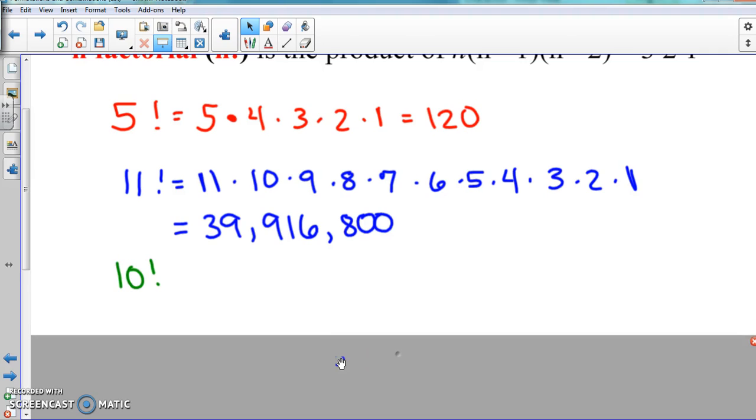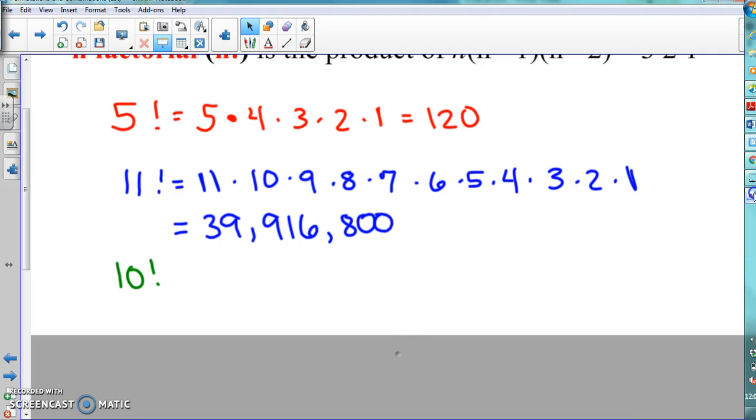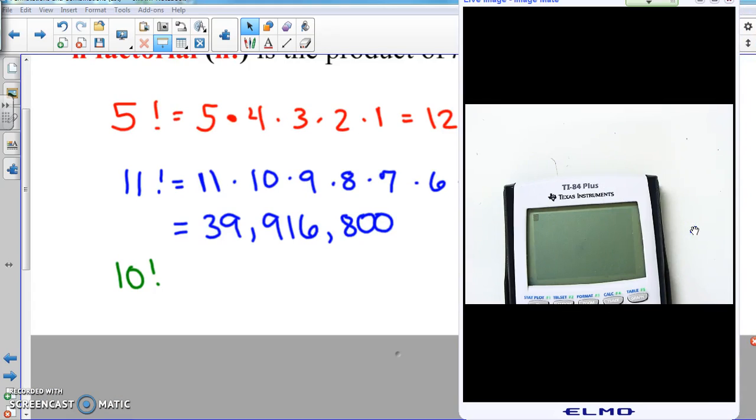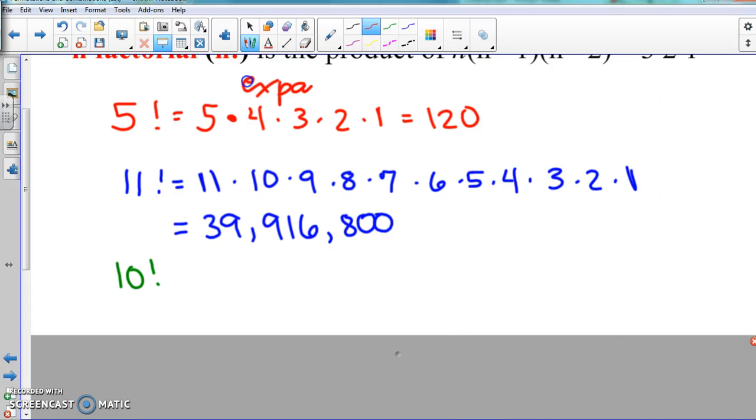So 10 factorial, what we're going to do in this one is I'm going to show you how to do it in the calculator. Because if it just says to solve it out, all you have to do is put it in the calculator and answer. But if it says to expand and solve, you have to actually write it out like we just did there with the five times four times three times two times one. That's the expanding part, and then the actual number is the answer. So again, this is your expand part, and that's just the answer right there.